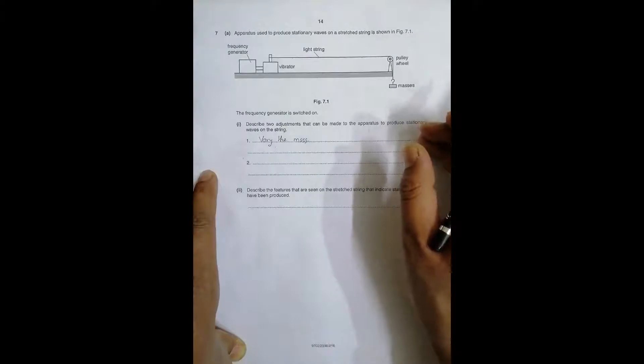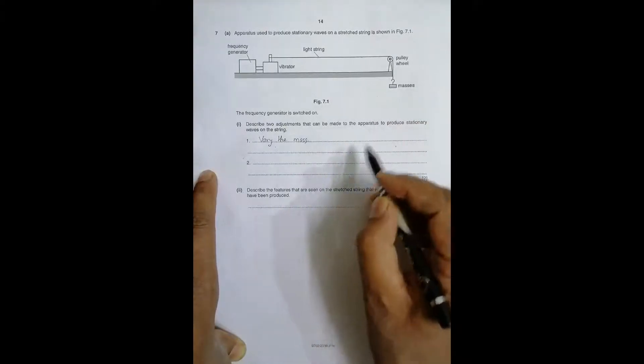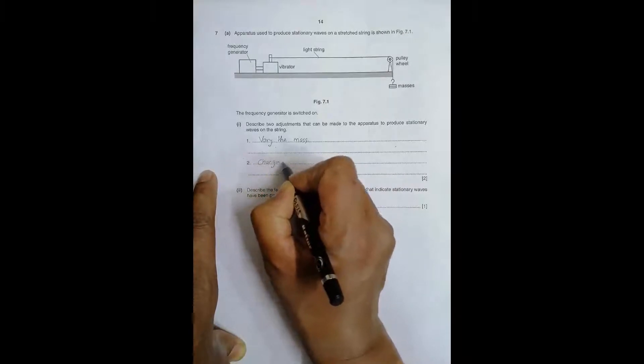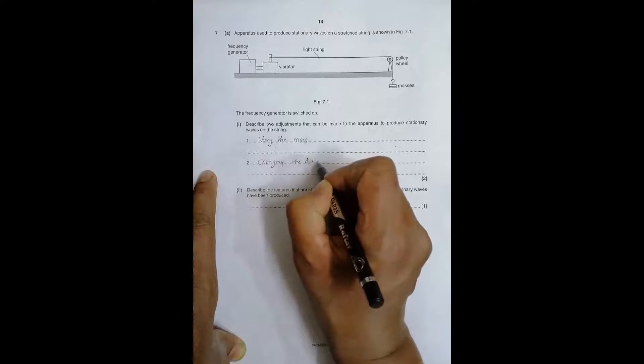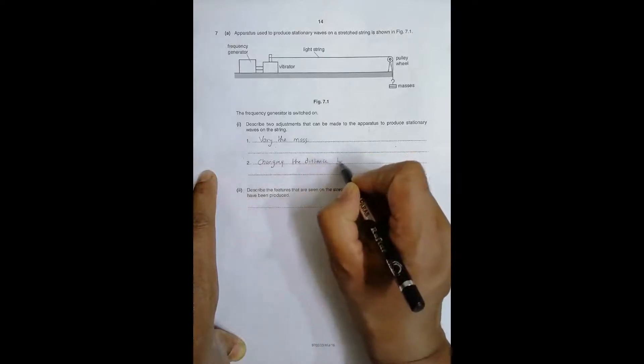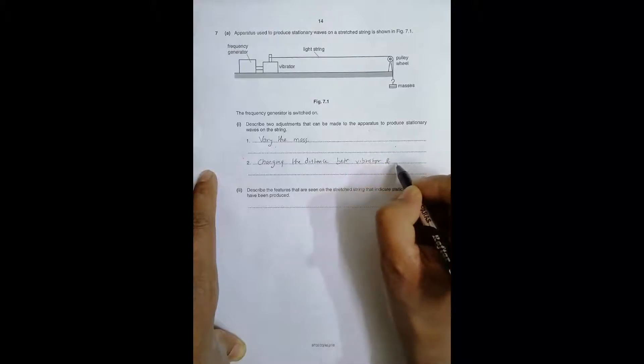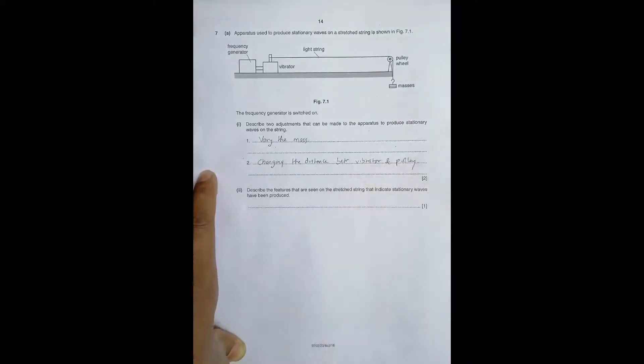Next is changing the distance between vibrator and pulley. Another change could be the variation of frequency itself, because the stationary waves will not be produced for every frequency. Only those frequencies will match when it is equal to the fundamental frequency or certain number of times of that fundamental frequency.